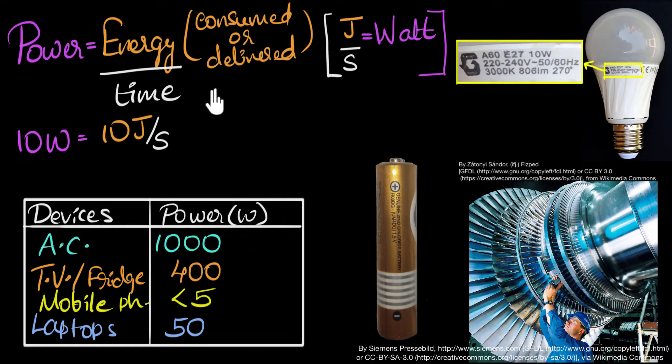And again, what I mean by delivered here is that these things convert some other form of energy into electrical energy. For example, batteries convert chemical energy into electricity. And you may learn more about that in chemistry. Generators convert rotational, mechanical energy into electrical energy. And we'll learn about this fun stuff in future videos.